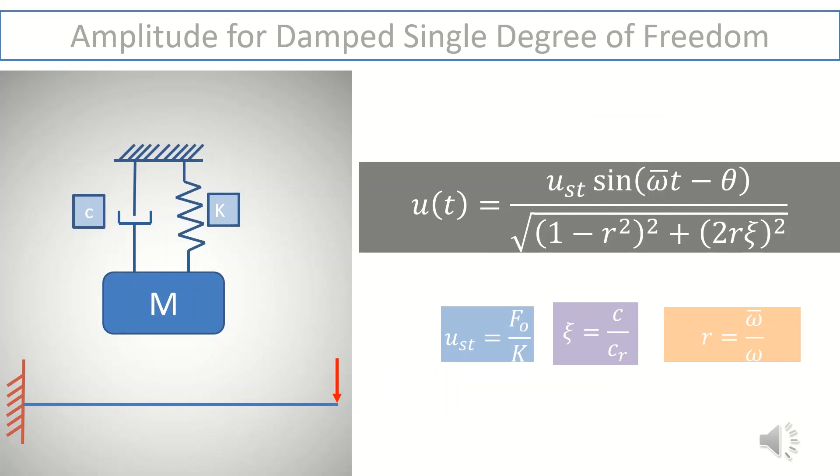To study the effect of damping on amplitude, let's observe the equation of amplitude for damped single degree of freedom. Damping is indicated with symbol c in this figure. For harmonic excitation, steady state amplitude at any time t can be represented by this equation where u_st is a static displacement, xi is a ratio of actual damping to the critical damping.